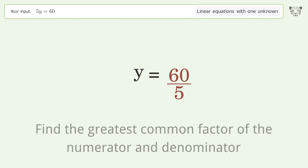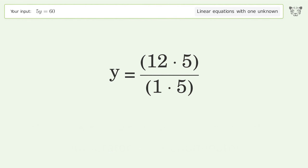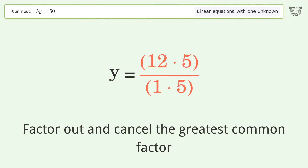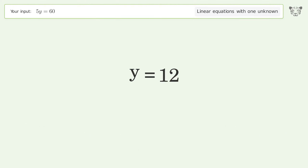Find the greatest common factor of the numerator and denominator. Factor out and cancel the greatest common factor. And so the final result is y equals 12.